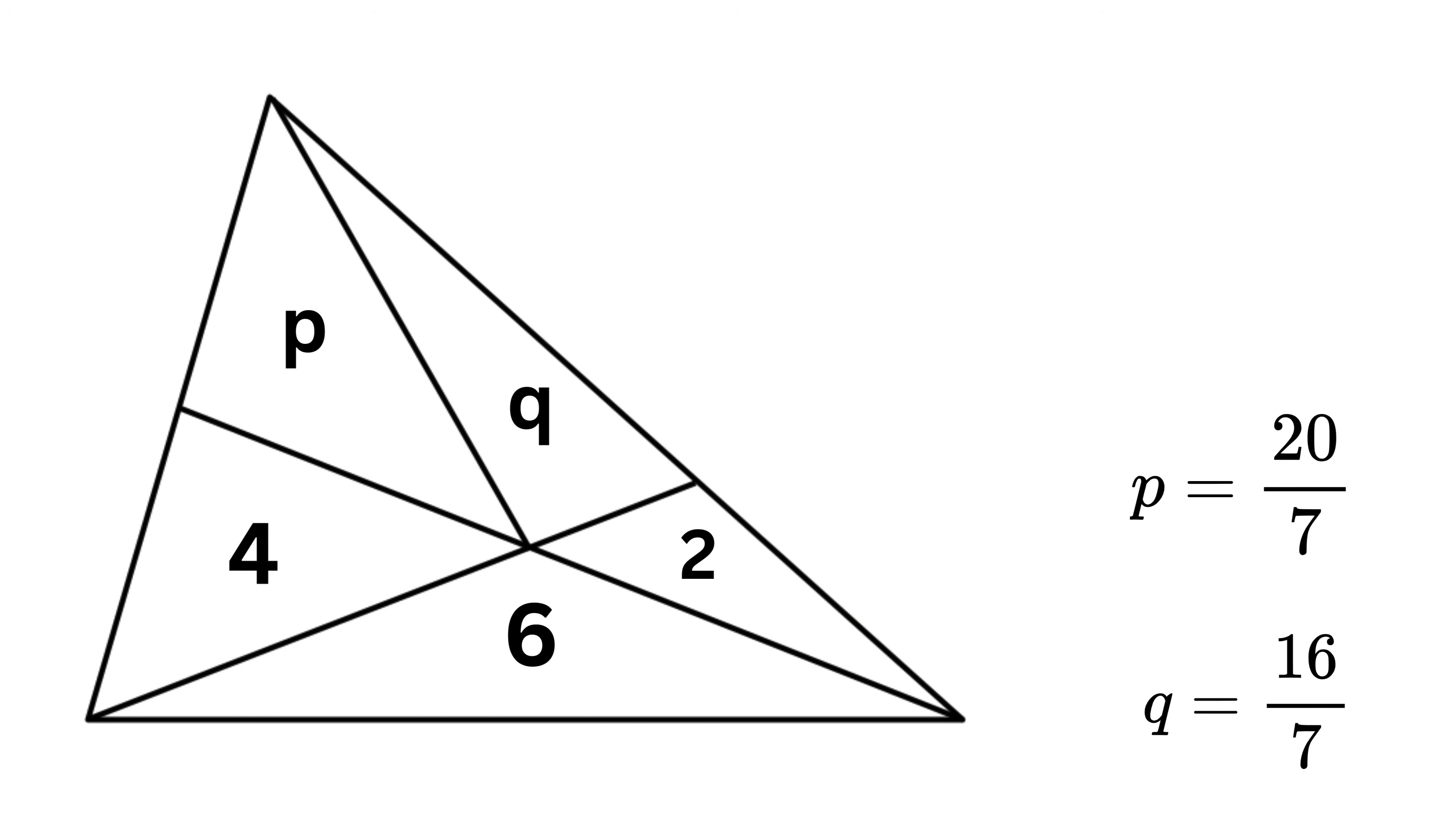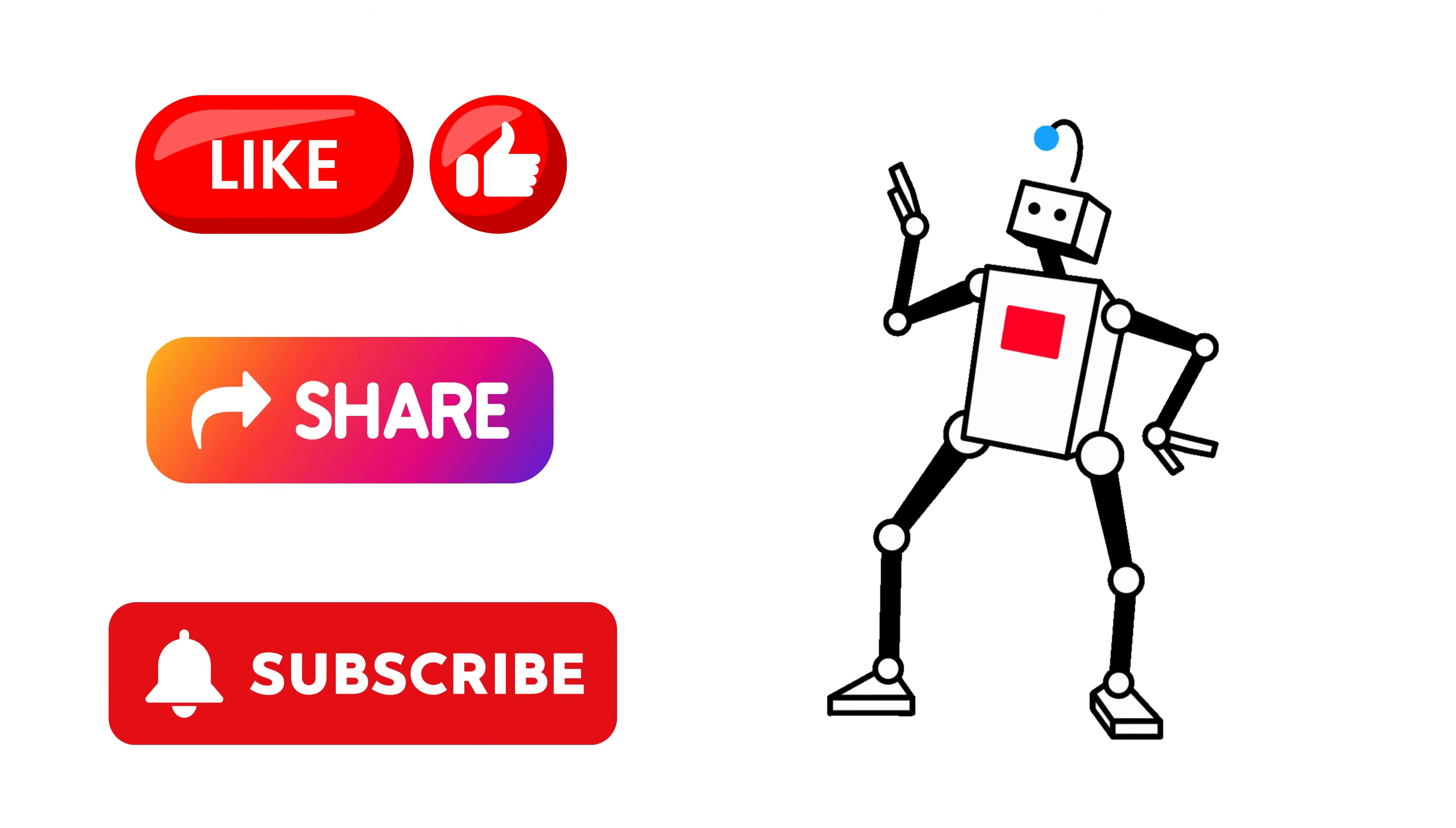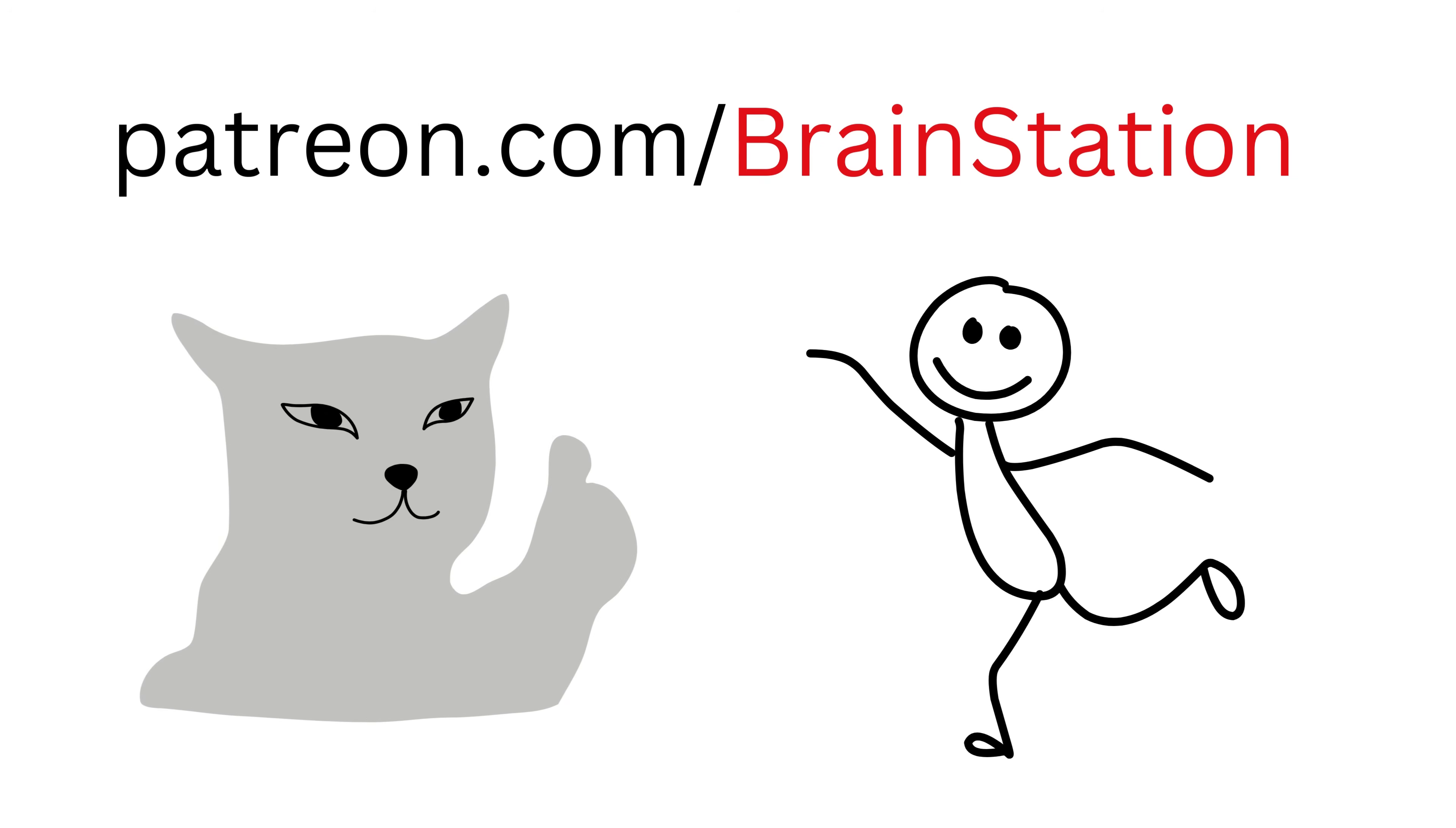But we are not done yet. Our job was to find the area of this shaded region, which is P plus Q or 36 over 7. And that's it. This is our final answer. Don't forget to share this video. This question is just too cool. Also, subscribe to the channel and give it a like. Always appreciated. You all are awesome. Soooo good!